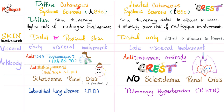In diffuse cutaneous, skin involvement is distal and proximal — everything. In limited, it's only distal: distal to the elbows and knees. For antibodies, diffuse cutaneous has anti-DNA topoisomerase 1 — also known as anti-Scl-70 — and anti-RNA polymerase 3. Anti-DNA topoisomerase 1 is associated with interstitial pulmonary fibrosis bilaterally. Anti-RNA polymerase 3 is associated with scleroderma renal crisis.